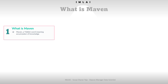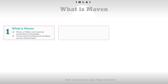Maven began as an attempt to simplify the build process in the Jakarta Turbine project. There were several projects, each with their own build files that were slightly different. So JARs were checked into CVS, and they wanted a standard way to build the projects, a clear definition of what the project consisted of, and an easy way to publish project information.